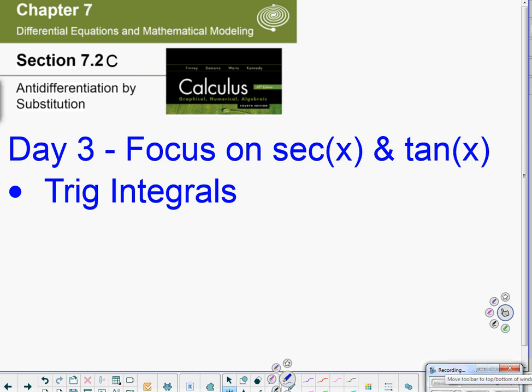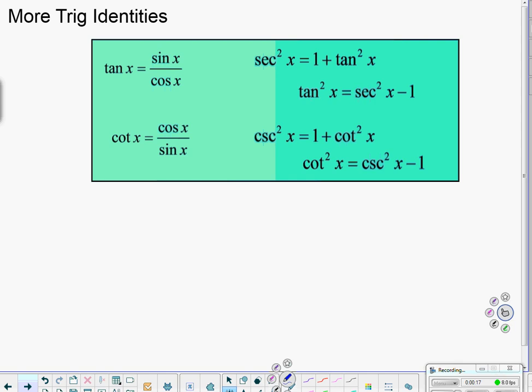Ready to go through section 7.2c? This one is going to focus on secant and tangent values or functions inside our trig integrals. Previous day we focused on sine and cosine being present. Now today we're going to really delve into the secant times tangent type idea. These Pythagorean identities will be super handy today. It allows us to convert like tangent squared into secant squared minus 1.